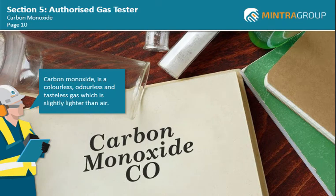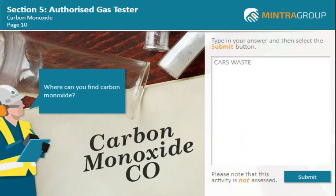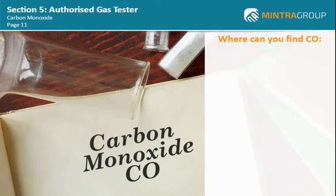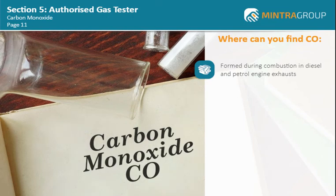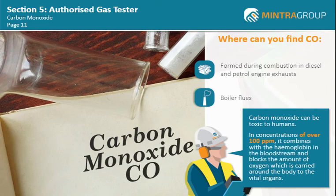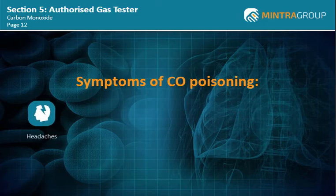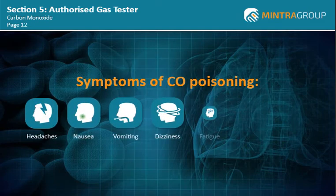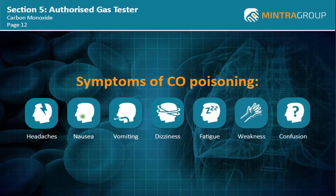Carbon monoxide, commonly known as CO, is a colourless, odourless and tasteless gas which is slightly lighter than air. Carbon monoxide is often formed during combustion in diesel and petrol engine exhausts. Boiler flues are also areas where carbon monoxide may be present. When encountered in higher concentrations of over 100 ppm, it combines with the haemoglobin in the bloodstream and blocks the amount of oxygen carried to the vital organs. Symptoms of carbon monoxide poisoning include headaches, nausea, vomiting, dizziness, fatigue, weakness, confusion and disorientation.